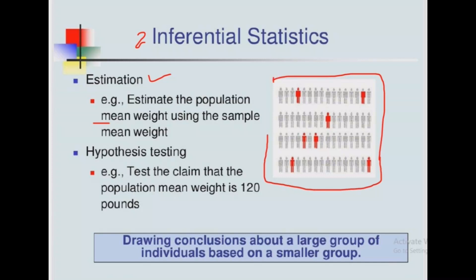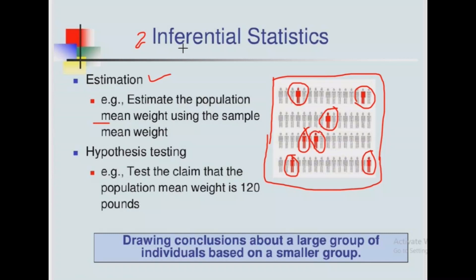Let's assume this is our population. From our population we select the encircled individuals — that is our sample data. We take this sample randomly from our population in equal proportion. Then using this sample data, we estimate our general population weight. In inference there are two types: inference about estimation, and inference about hypothesis testing.